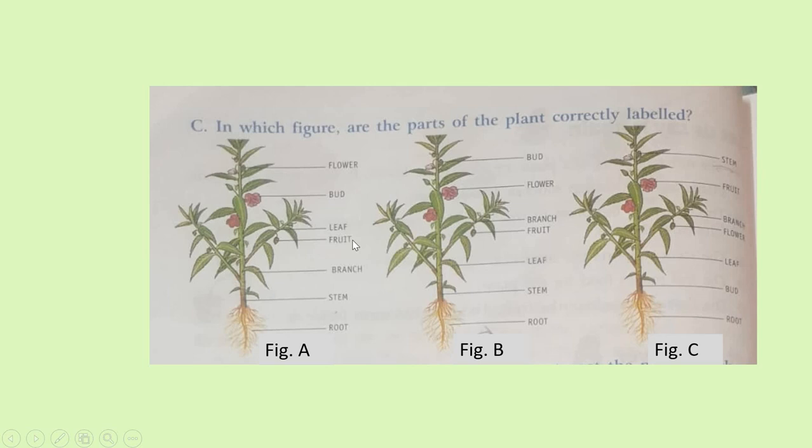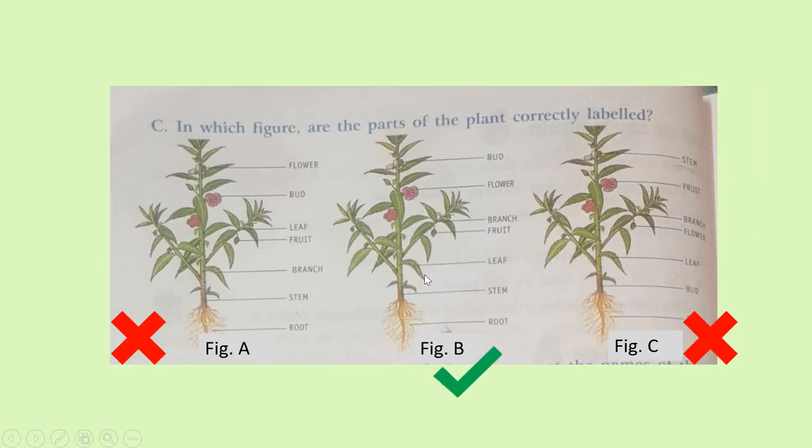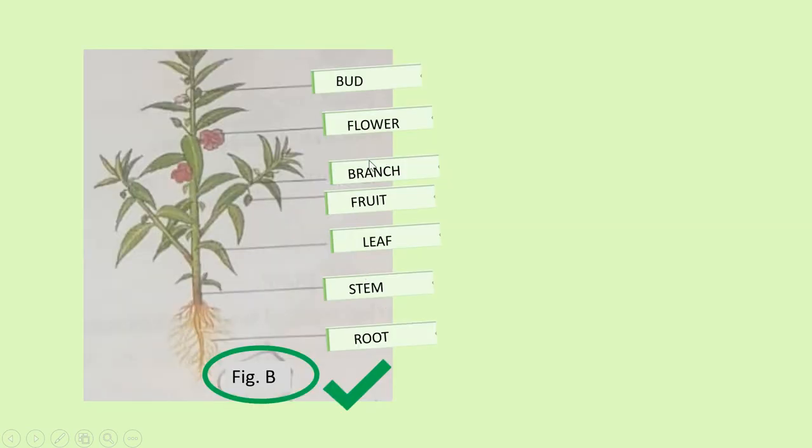Now, let's check B. In B, it is, everything is correct. See here. Bud, flower. See, this is a bud. This is a flower. This is a branch. Then fruit. Then leaf. Then stem. And last, in the last, there are roots. So, figure B is the correct one.